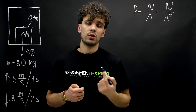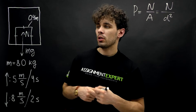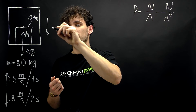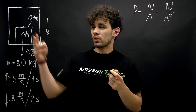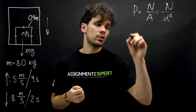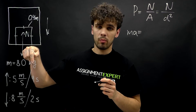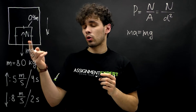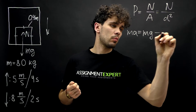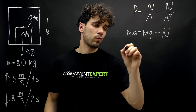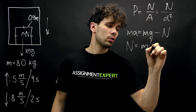Now let's consider the first case: when the elevator goes down. The acceleration is directed downwards, so we take downward as the positive direction. Applying Newton's second law, MA equals mg (positive, same direction) minus N (negative, upward). From this, the normal force N equals M times (g minus a).